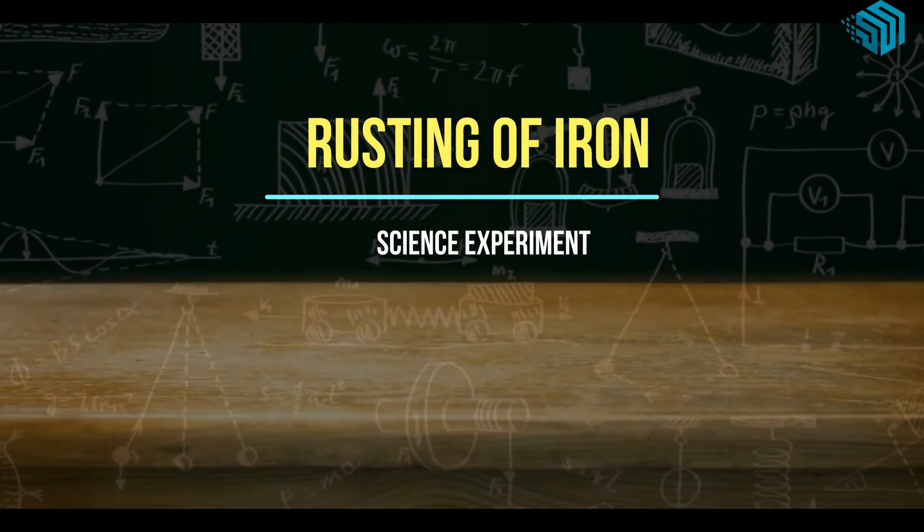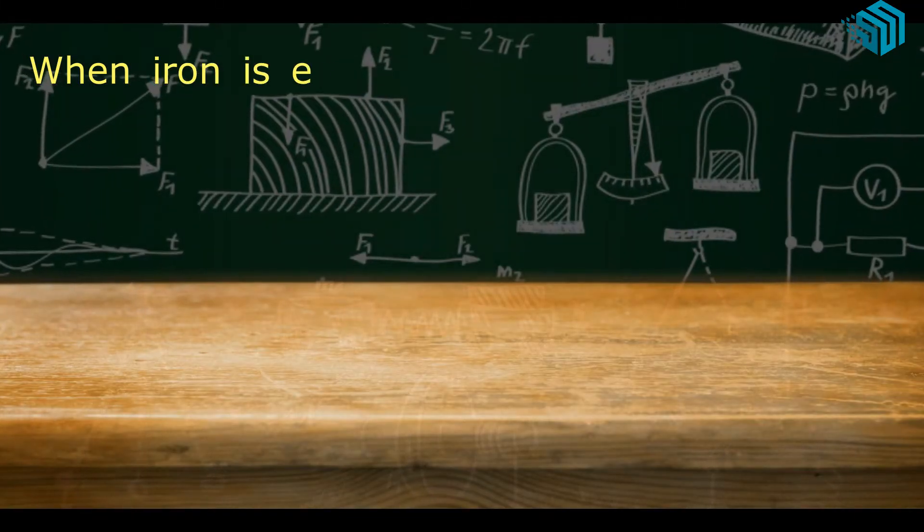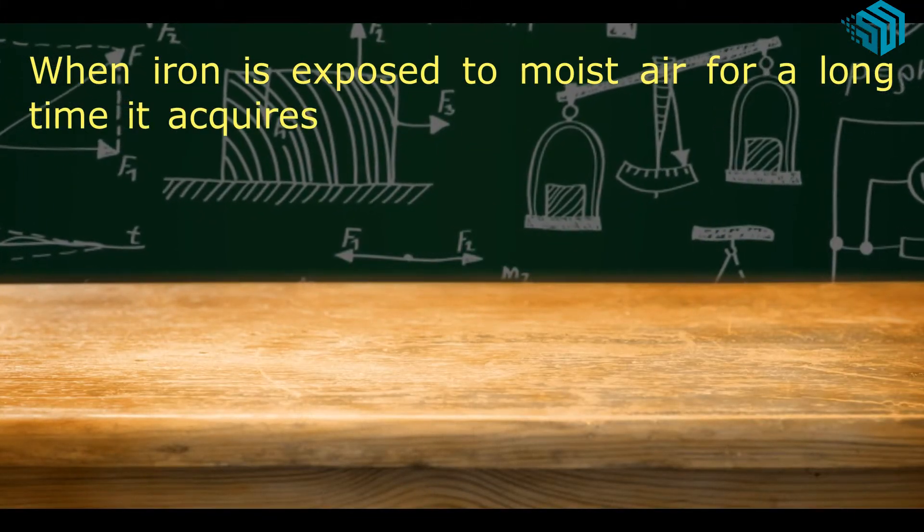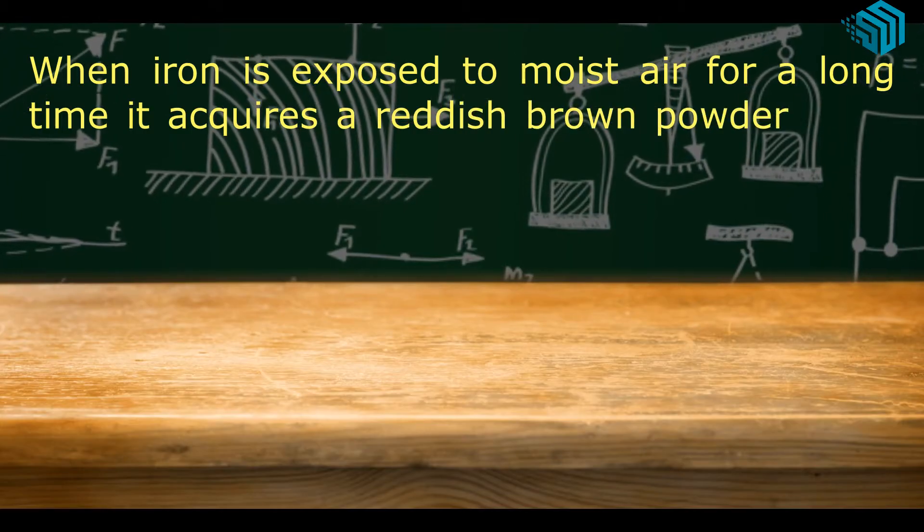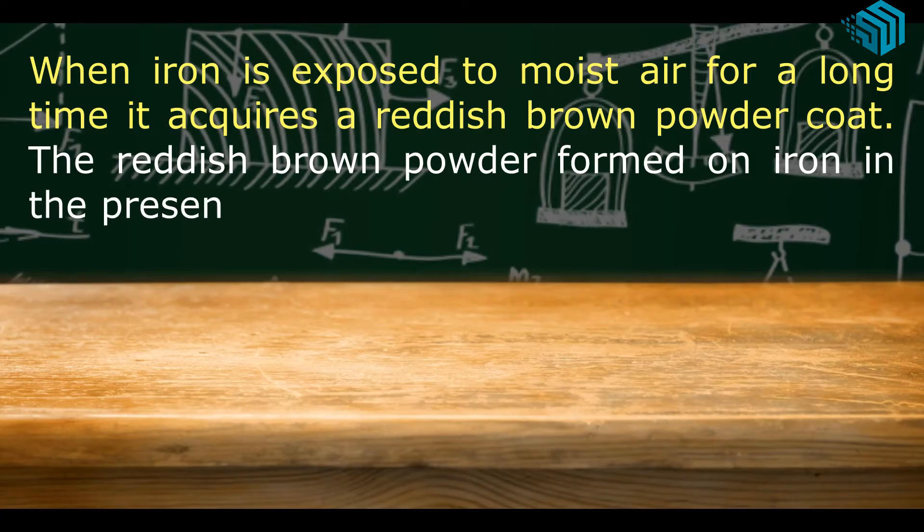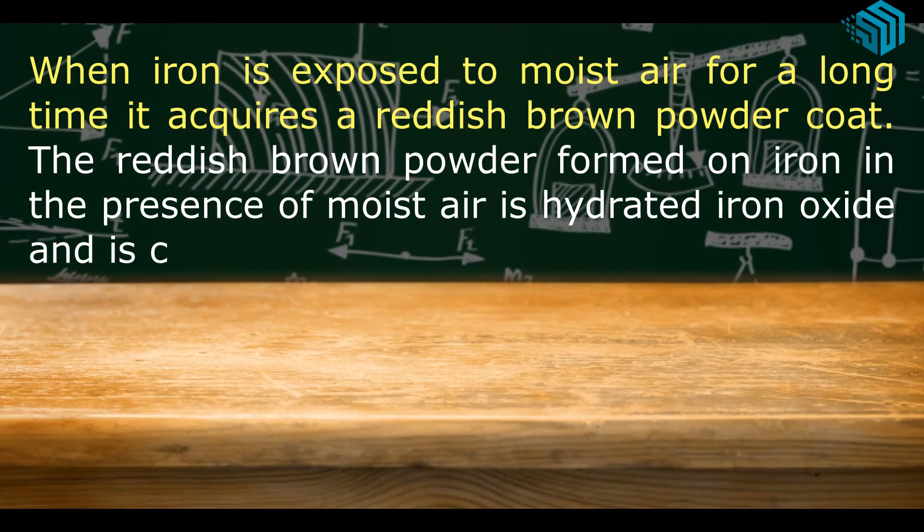Rusting of iron: When iron is exposed to moist air for a long time, it acquires a reddish-brown powder coat. The reddish-brown powder formed on iron in the presence of moist air is hydrated iron oxide.